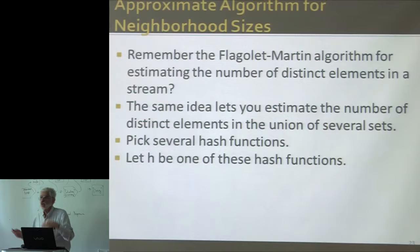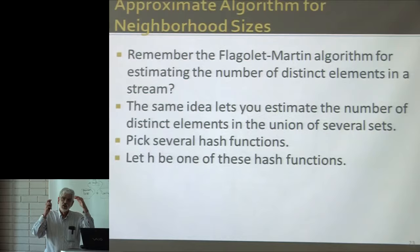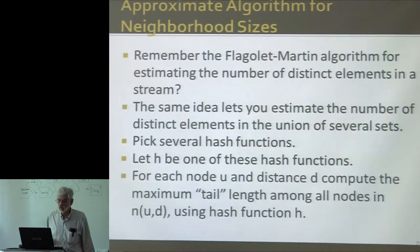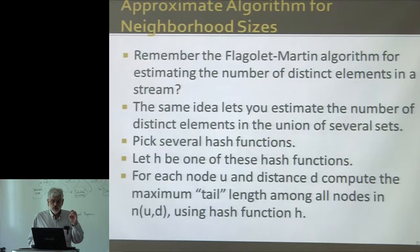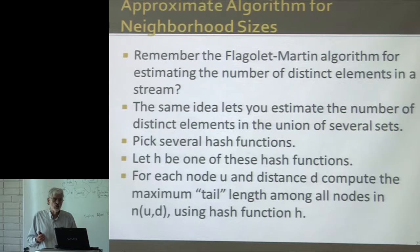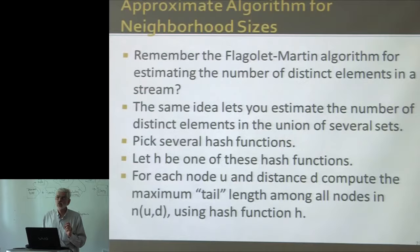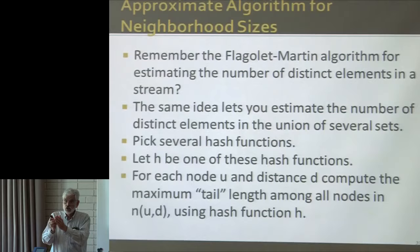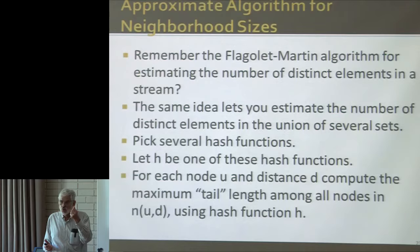Again, you compute capital R where 2^R is the estimate — the maximum tail length, the maximum number of zeros at the end of the hash value. 2^(maximum tail length) is the estimate of the neighborhood size that any one hash function gives you. You combine those using averages within small groups and then median of all the groups to get the true estimate. The more hash functions you use, the closer you're going to be. The nice thing about the Flajolet-Martin idea is: if you're taking the union of 300 neighborhoods and a node appears in 10 of them, its tail length only counts once, because you're just looking for the maximum.